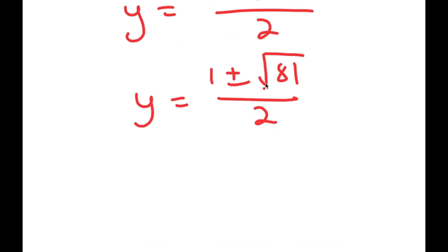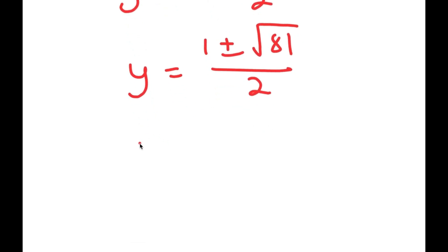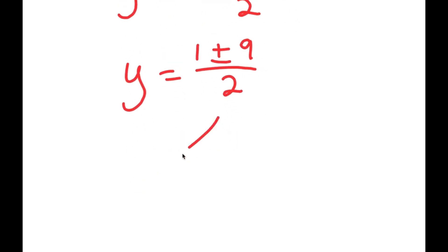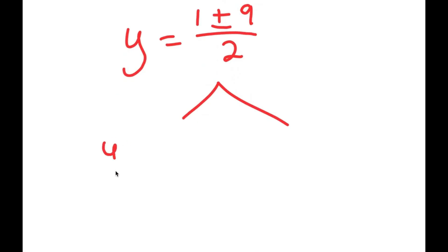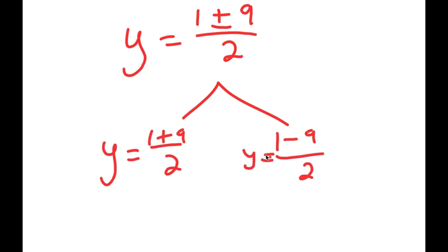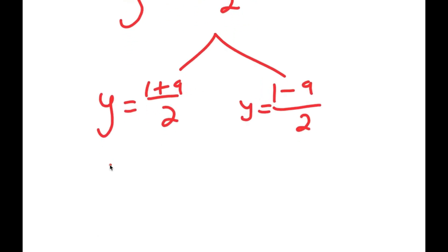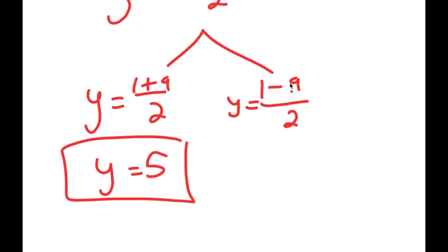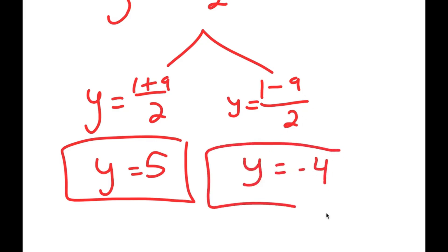This simplifies to 1 plus or minus the square root of 1 plus 80 over 2, which equals 1 plus or minus the square root of 81 over 2. The square root of 81 is 9, so y equals 1 plus or minus 9 over 2. This gives two solutions: y equals 1 plus 9 over 2, which is 10 over 2 equals 5, and y equals 1 minus 9 over 2, which is negative 8 over 2 equals negative 4.